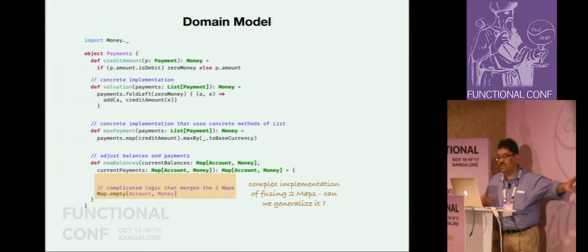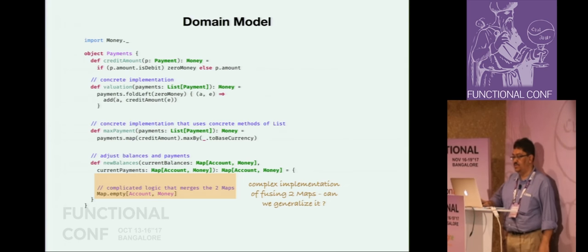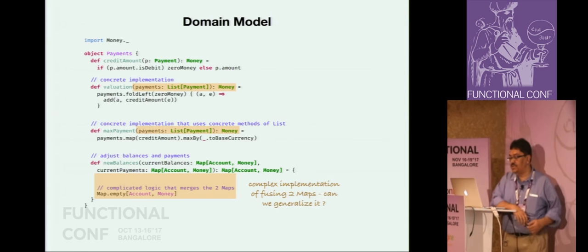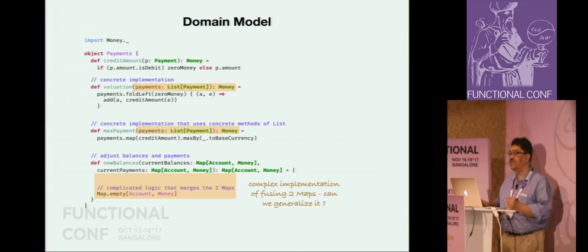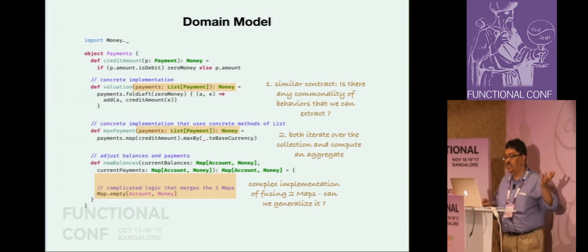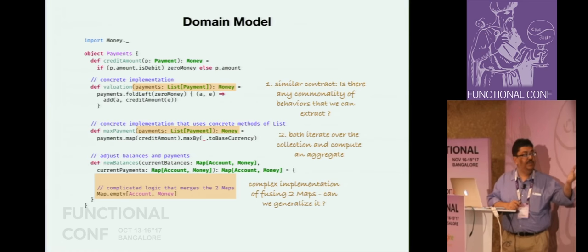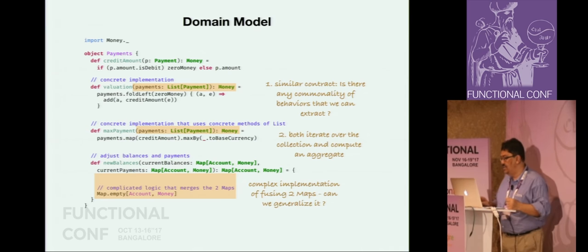This logic in new balances is quite complicated - I intentionally elided it for conciseness. Here are two other functions: valuation and max payment. Both of them take a list of payments and return a Money. Is there any commonality of behavior we can extract? Both do basically the same thing - iterate over the collection and compute an aggregate. The aggregate is different: in one case we are adding and in the other case we are finding the maximum. So once again there is a chance that if we squint hard we may find some design pattern within.